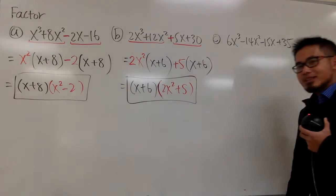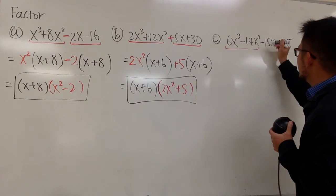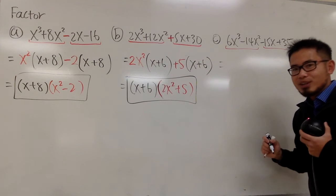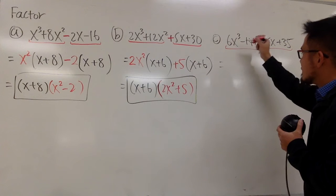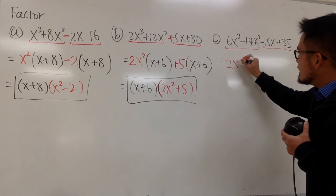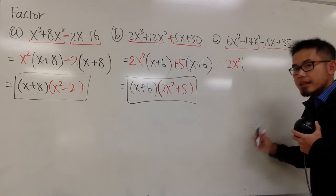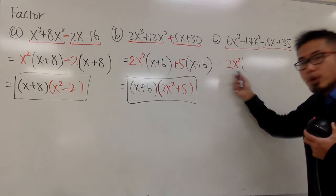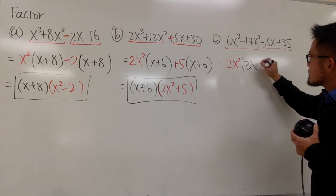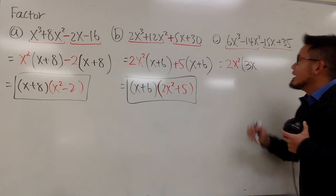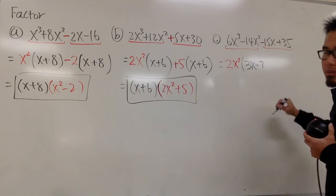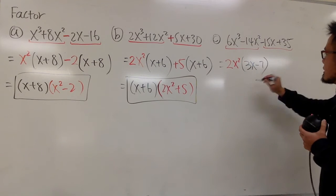Moving on to the third one. Looking at 6 and 14, we can factor out a 2. For x to the third and x squared, we factor out x squared, giving 2x squared overall. 6x cubed factored by 2x squared leaves 3x. And negative 14 divided by 2 gives negative 7. So the first group is 2x squared times the quantity 3x minus 7.